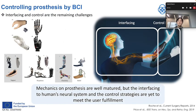If we overview the development of both upper and lower prostheses, the mechanical features of them are well-matured. However, interfacing to humans' neural system and the control strategies are yet to meet user fulfillment. In this talk, I will divide these sections into two topics with an overview on the state-of-the-art.